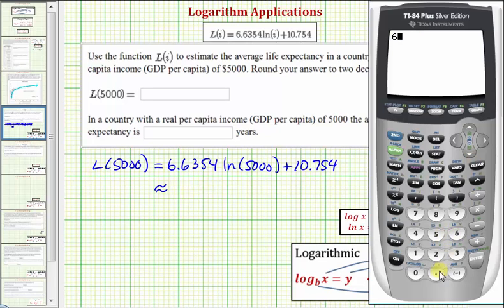So we have 6.6354 times natural log, here's the natural log button, 5,000 close parenthesis plus 10.754. So the function value is approximately 67.27.